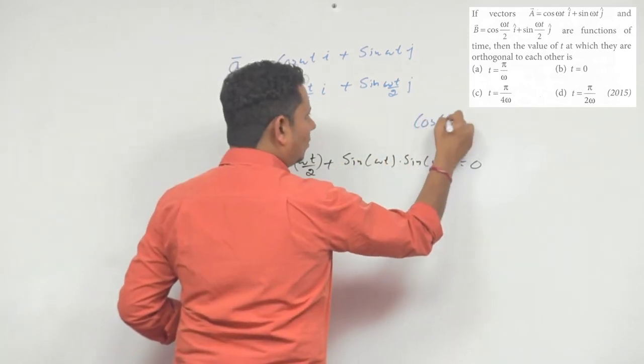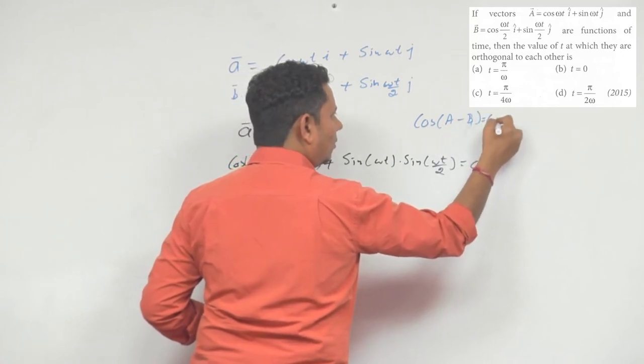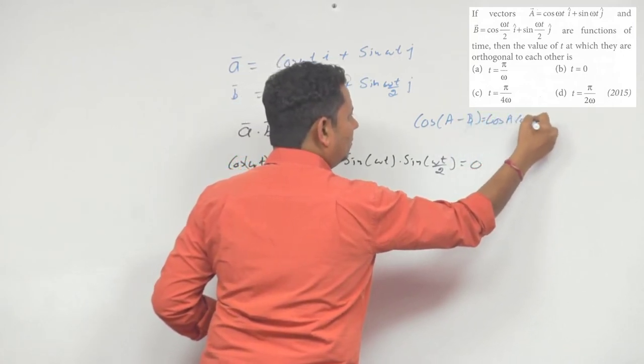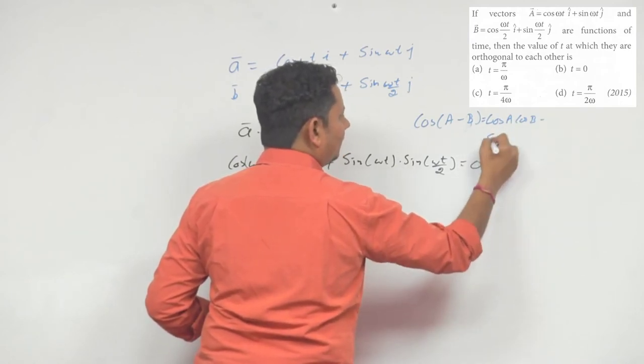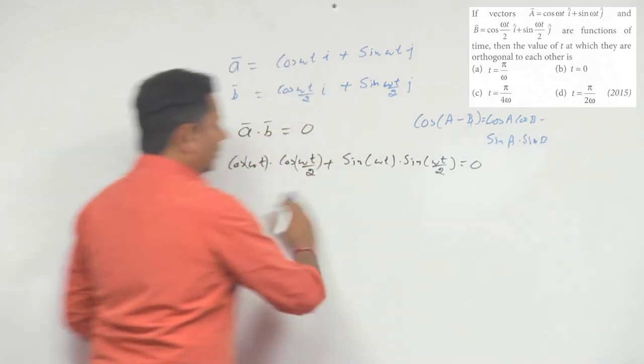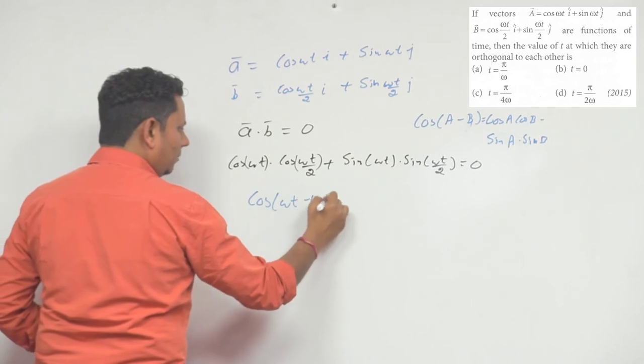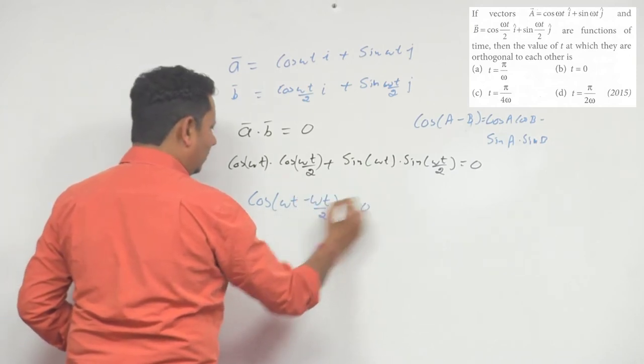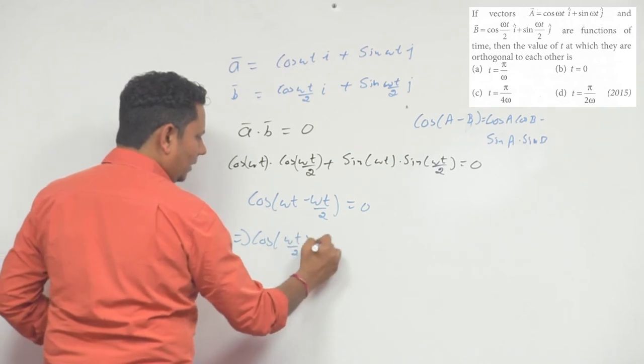It says cos a minus b is equal to cos a cos b plus sin a multiplied by sin b. तो left hand side की अपने जो condition है वो बन जाएगी cos of omega t minus omega t by 2 equal to 0 which implies cos of omega t by 2 equal to 0.